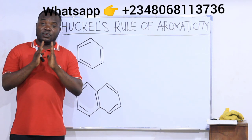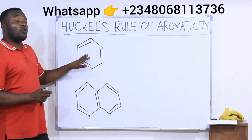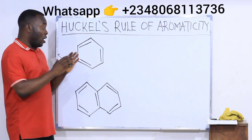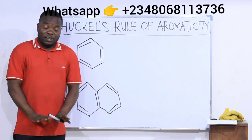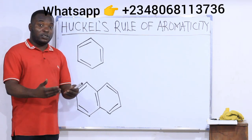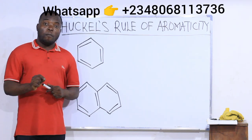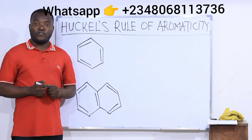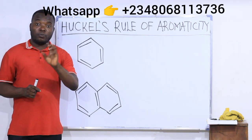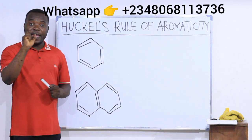The third condition says the compound must be planar — that is, flat. We know benzene is planar, but at this level we are going to skip that condition since we are mostly using planar compounds. The last condition says the compound must obey Hückel's Rule of aromaticity, which states that the total number of pi electrons must equal 4n plus 2, where n is a positive whole number.